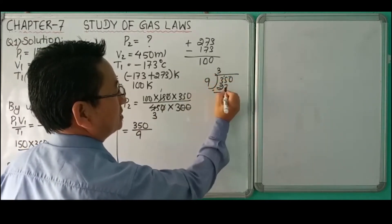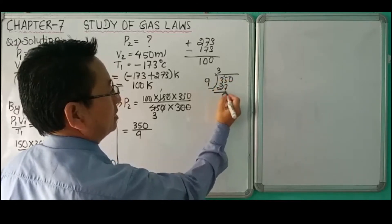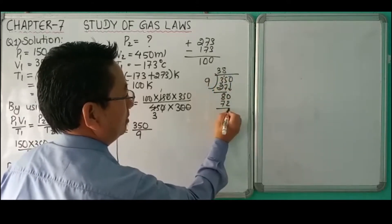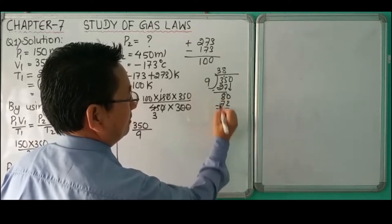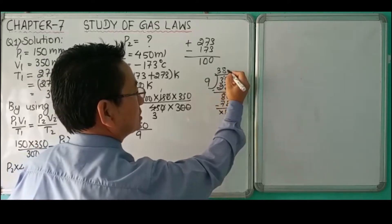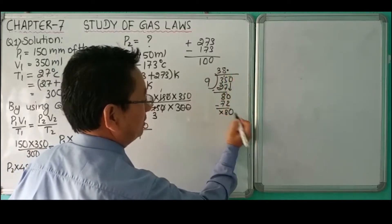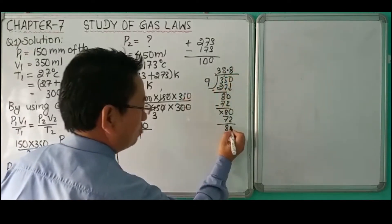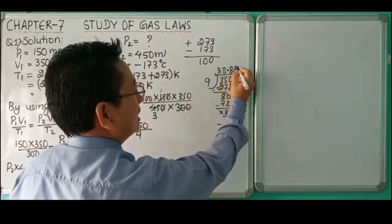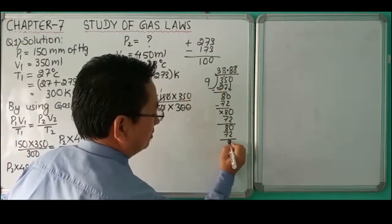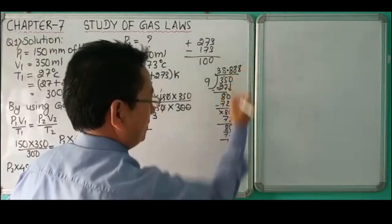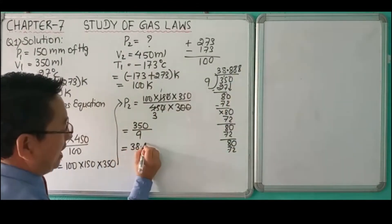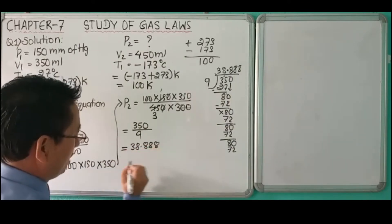9 times 3 is 27, bring down the remaining digits. 9 times 8 is 72. We continue the division, putting zeros in the dividend as needed. The answer is 38.89 millimeters of mercury.